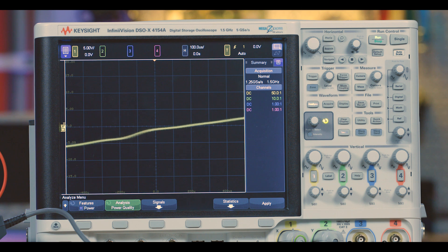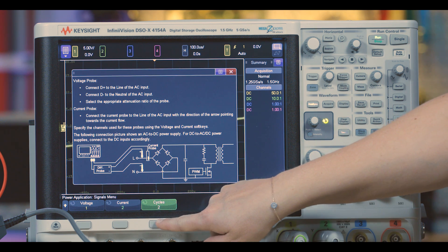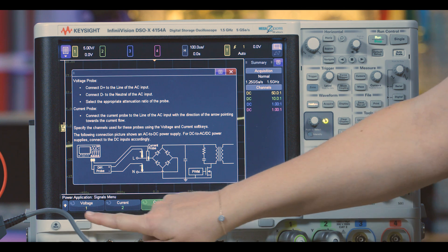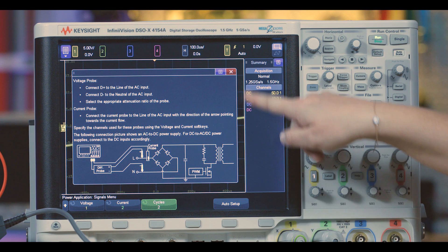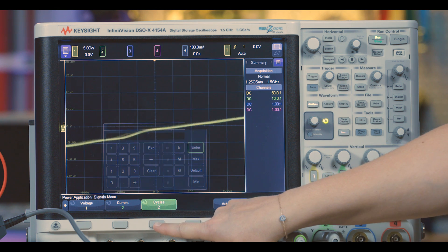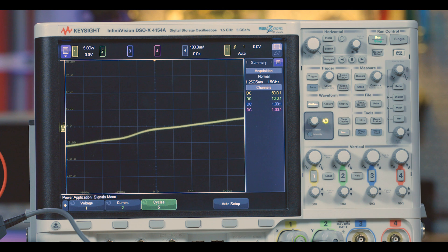Since we'll calculate power from our current and voltage measurements, I'll double check that my channels are assigned on the scope to match this. I choose the signals menu, and the default on the scope is that channel 1 is voltage and channel 2 is current. There's also this handy diagram that pops up to show you where to probe your power supply for this test. I'm also going to look at five cycles.